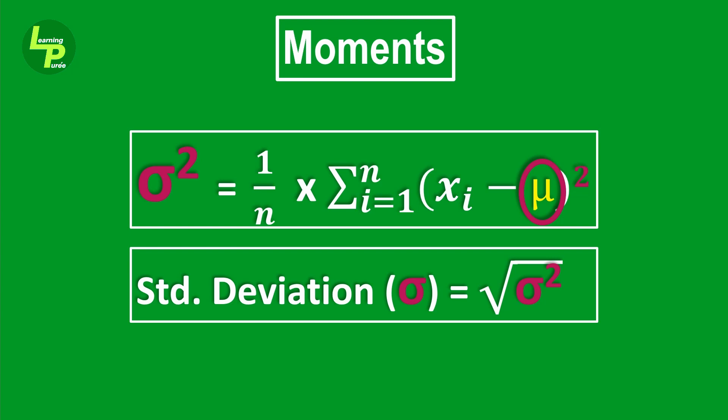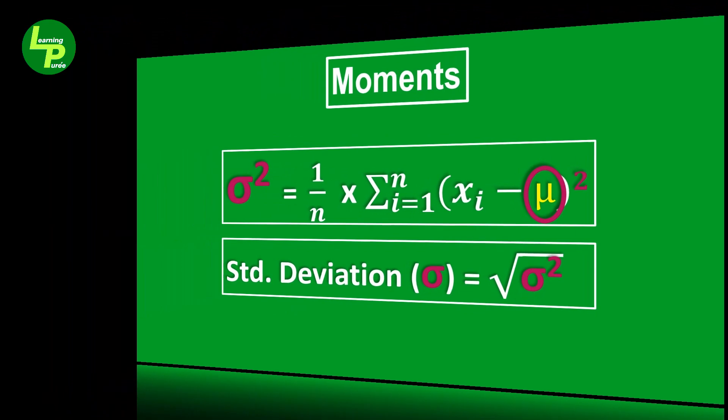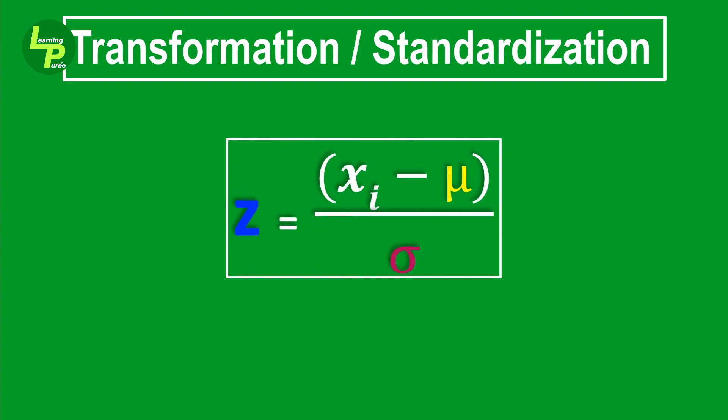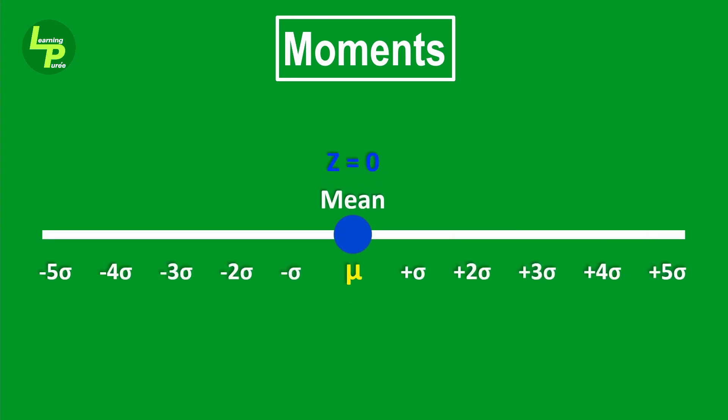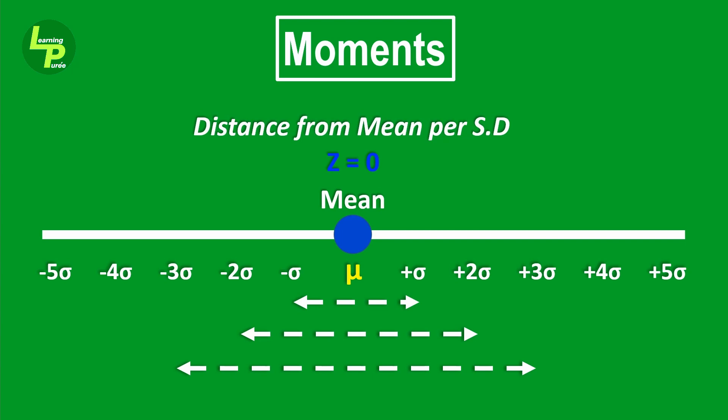In statistics, there is also the concept of transformation or standardization. We use this equation to standardize or normalize large values or obtain z-scores. If you see closely, the z-score stands for the number of standard deviations above or below the mean for any observed data points.